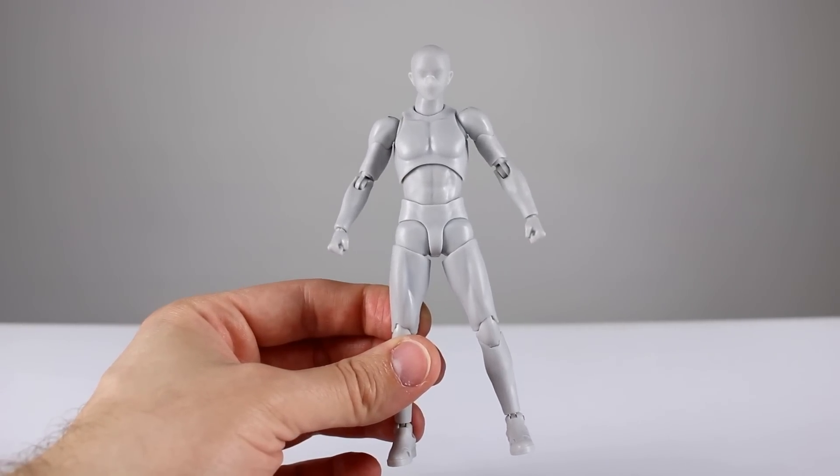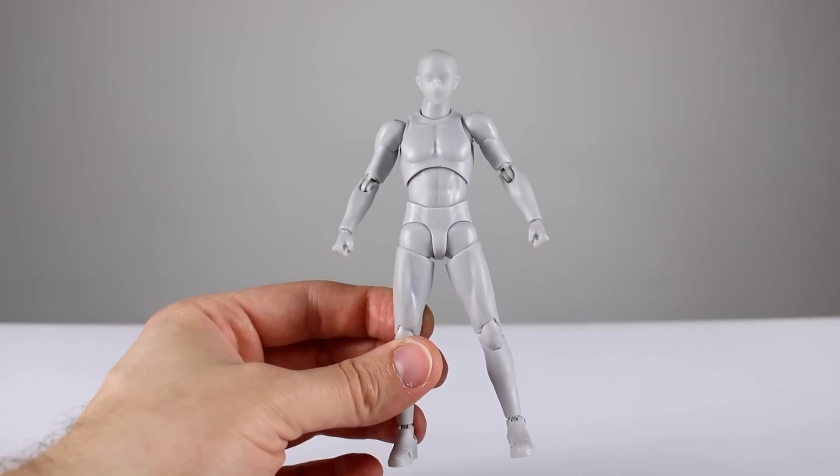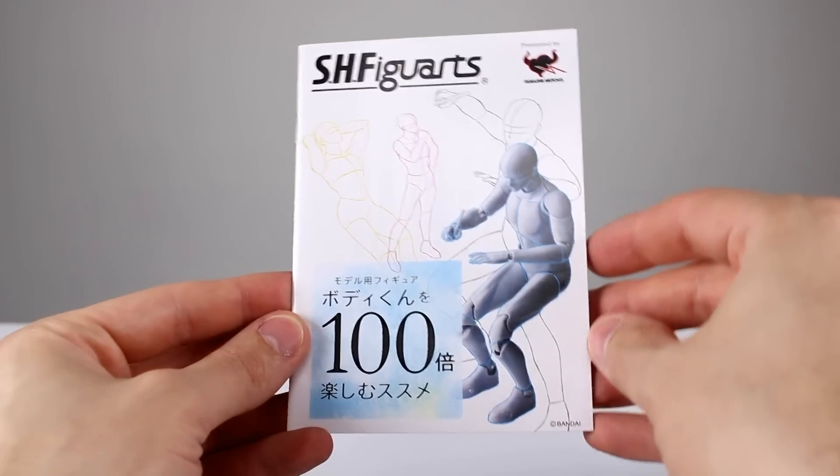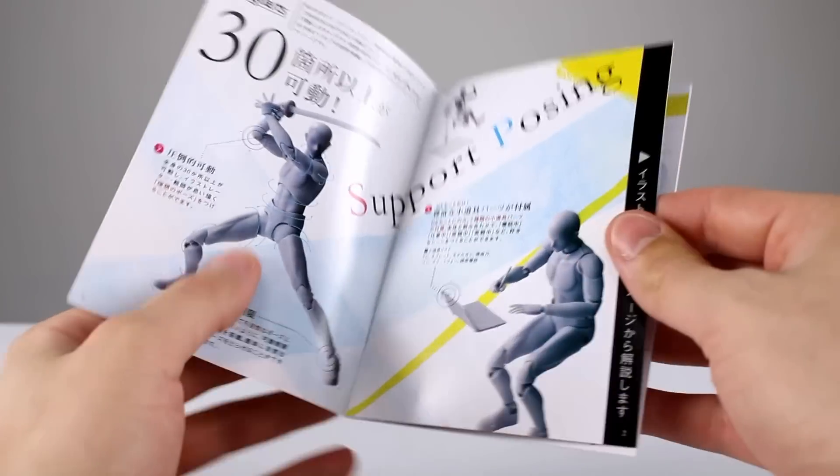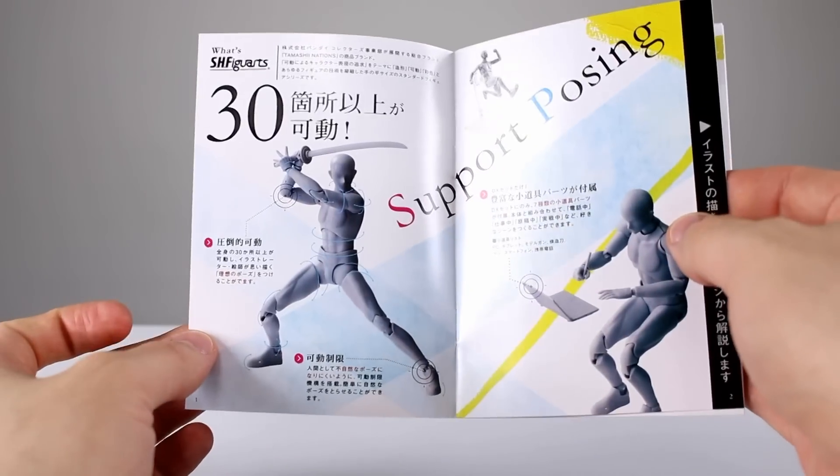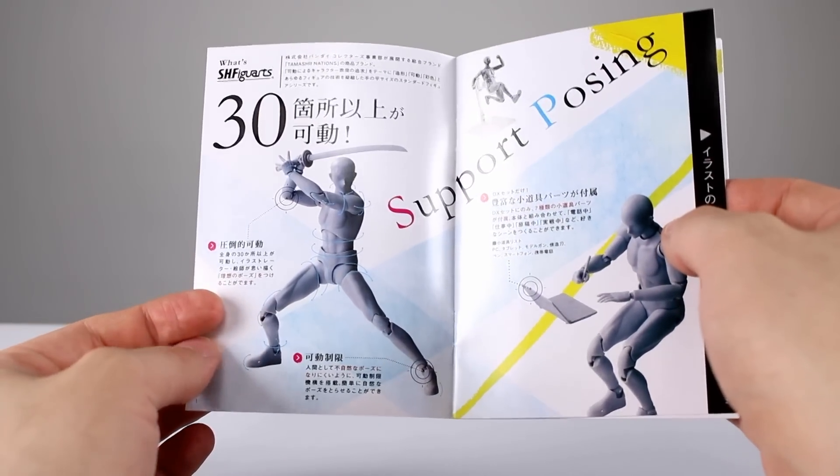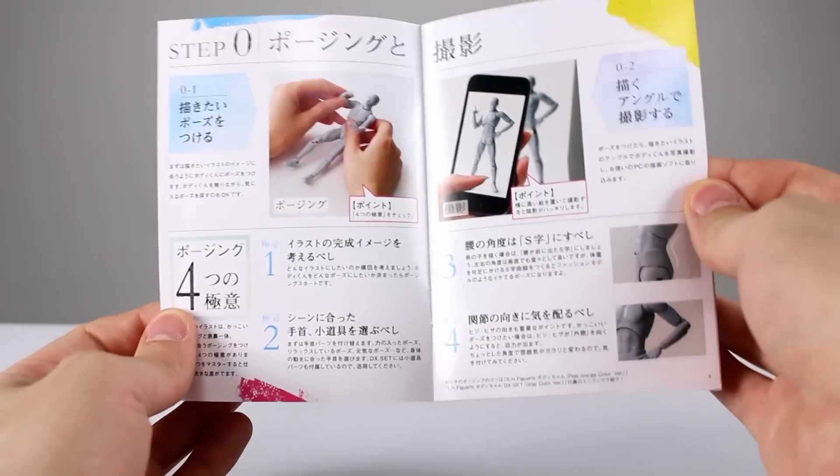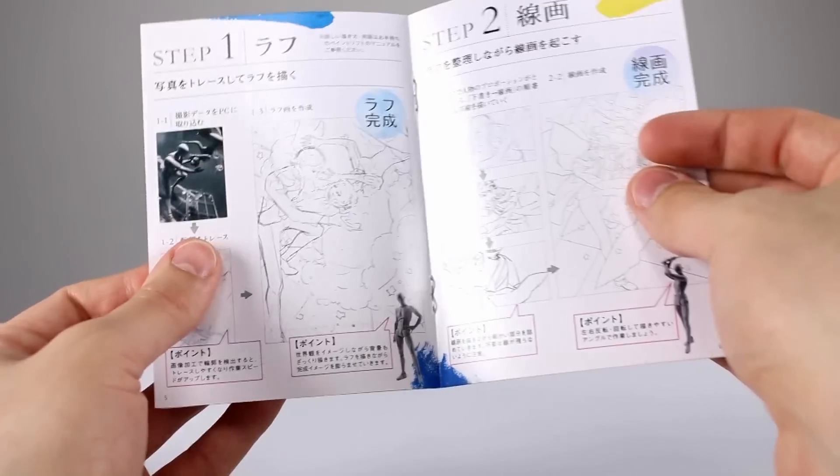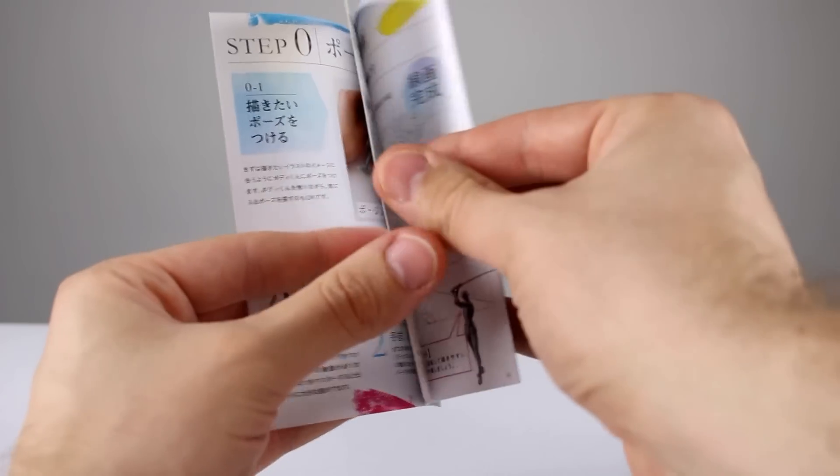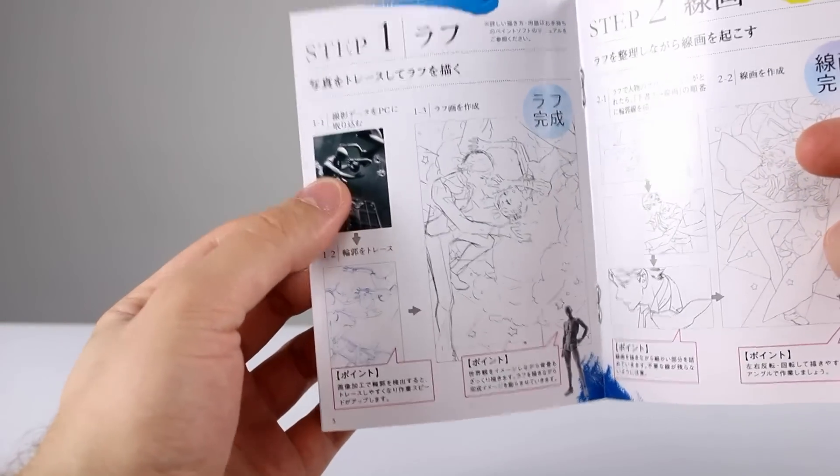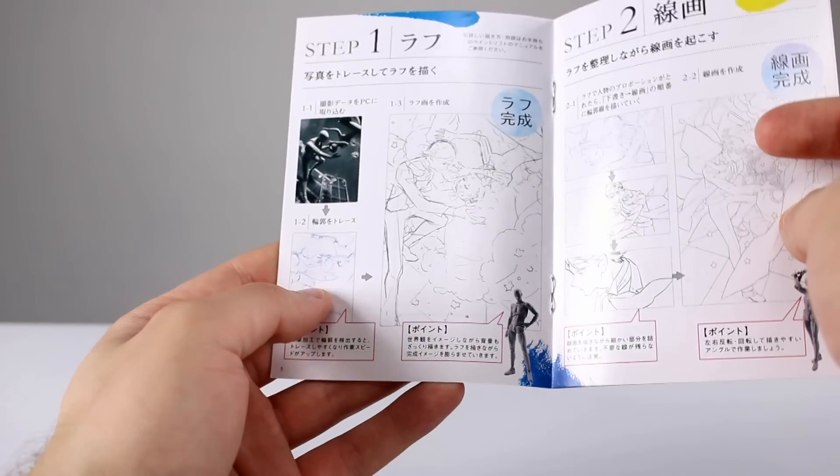But first, let's talk about the book it comes with. It comes with a little booklet that looks like this, and it's basically talking about—it's in Japanese, so for most of you that's going to be hard to do anything with other than looking at the pictures. But it talks about the posability of the figure, the accessories it comes with, and then how you can use the figure for art reference. It shows you how you can pose the two figures together and then take a photo of that or just look at it and sketch out your anime or your manga or whatever it is you're doing, your artwork, and how you can turn it into an actual piece of artwork.